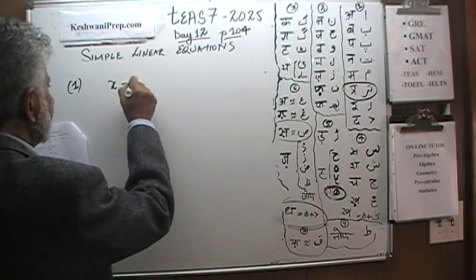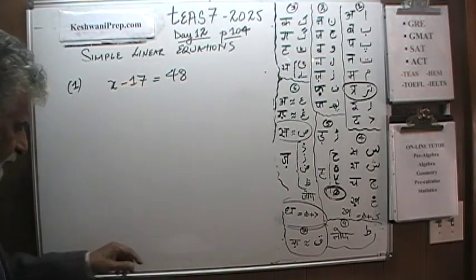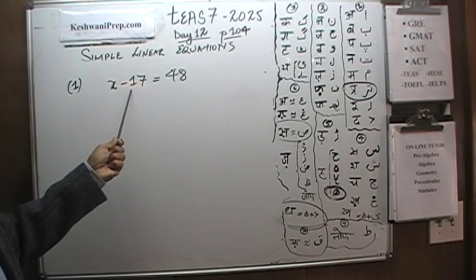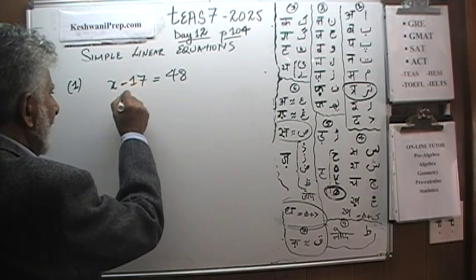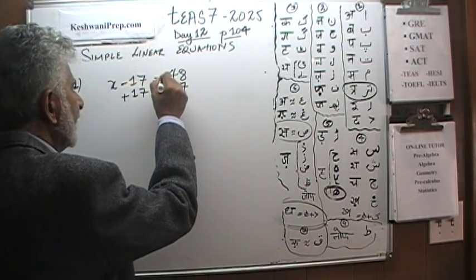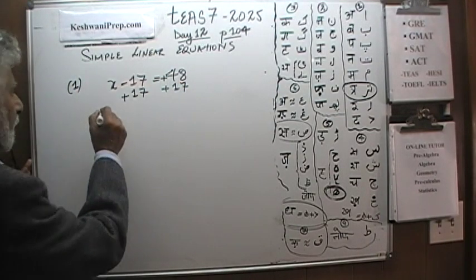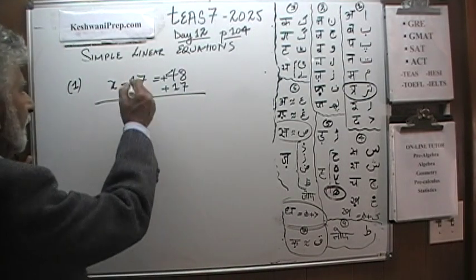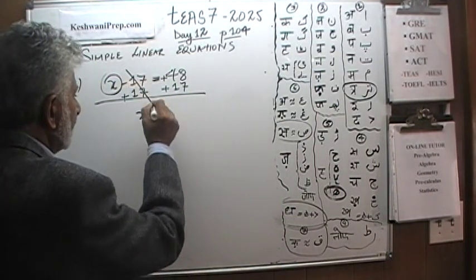We are told that x minus 17 is equal to 48. The question is: how much is x? In order to figure out x, we have to get rid of this negative 17. Since it's negative 17, we add 17 to both sides. And this 48 also has a positive sign in front of it even though it's not written — that's a positive 48. So now we have added 17 to both sides.